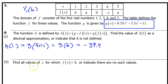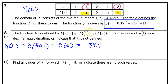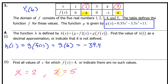A part 2: find all values of x for which f of x is equal to 4. f of x is completely defined by this table. f of x is equal to 4 here and here, so that's at x equals 2 and x equals 5.